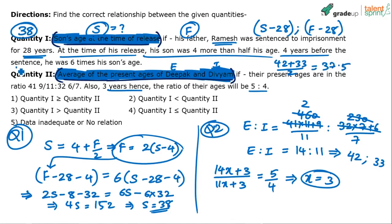Now doing the comparison: Quantity 1 is 38 and Quantity 2 is 37.5. Clearly, Quantity 1 is greater than Quantity 2. So the answer is that Q1 is more than Q2.